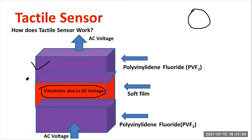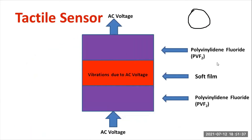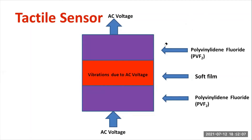To explain briefly: remember the sandwich arrangement and the soft film material — that's very important. The physical interaction is connected to the soft film, and the external voltage is applied to one layer of PVF2. With respect to the physical interaction, vibration of the soft film takes place. With respect to that, the output voltage also varies. You measure the physical interaction through the variation in output voltage. This is the way tactile sensors operate.